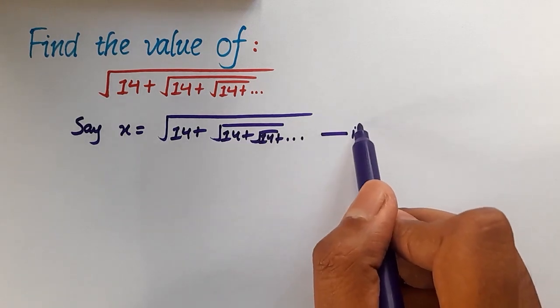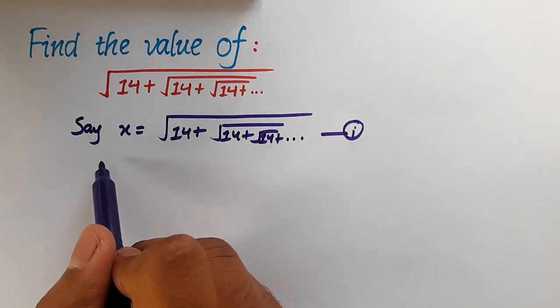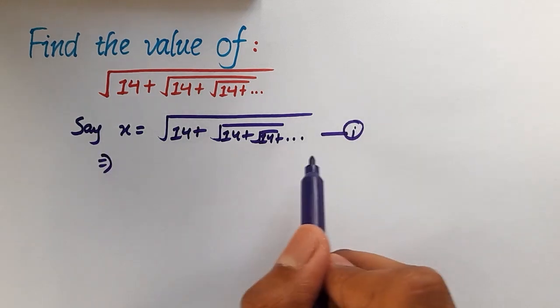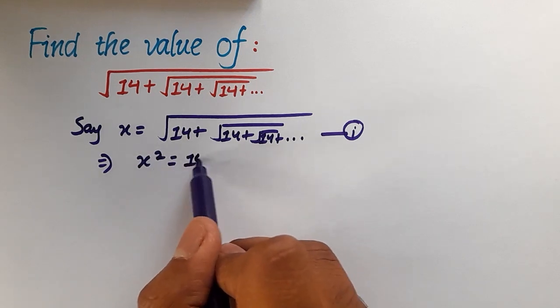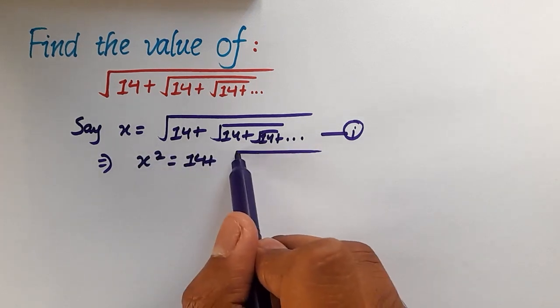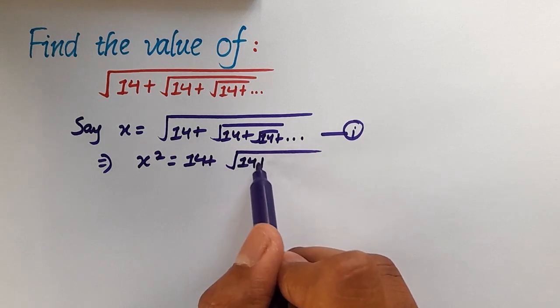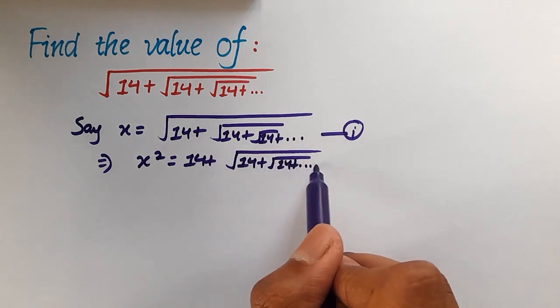Let's say this is equation 1. Now if we square this equation on both sides, we will have x square is equal to 14 plus under root 14 plus under root 14 plus and so on.